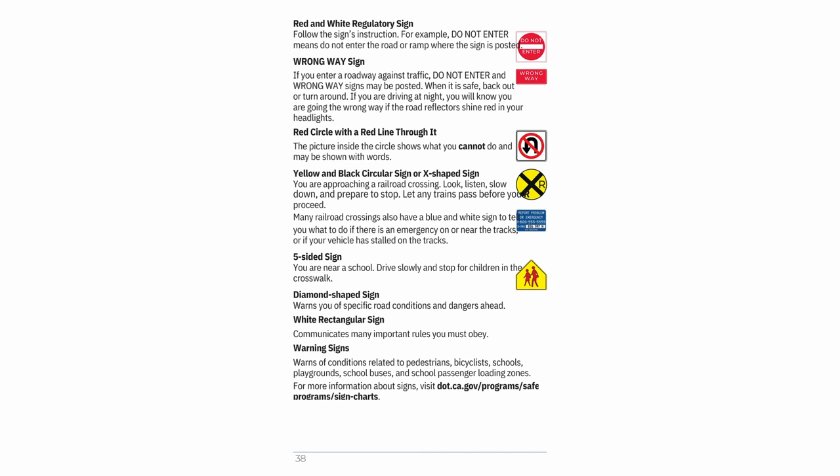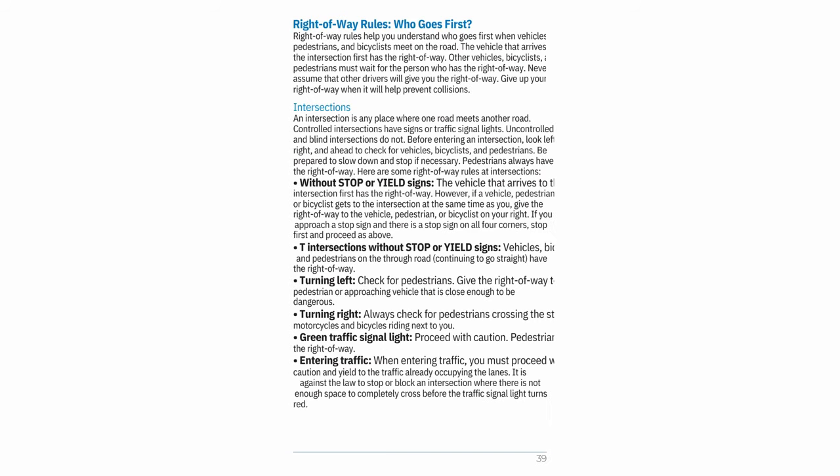Right-of-way rules — Who goes first: Right-of-way rules help you understand who goes first when vehicles, pedestrians, and bicyclists meet on the road. The vehicle that arrives at the intersection first has the right-of-way. Other vehicles, bicyclists, and pedestrians must wait for the person who has the right-of-way. Never assume that other drivers will give you the right-of-way. Give up your right-of-way when it will help prevent collisions.